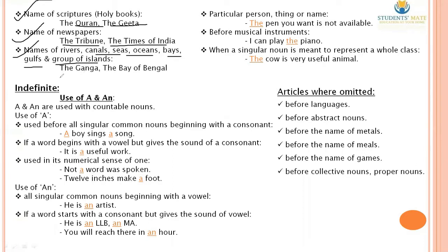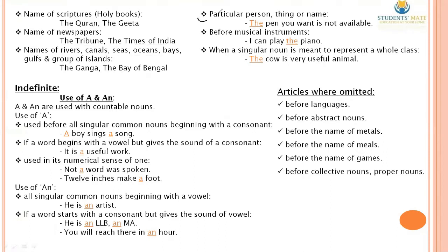For example, the Ganga, the Bay of Bengal, etc. Also 'the' is used before a particular person, thing, or name — whenever we want to make something particular, we add 'the' before it.